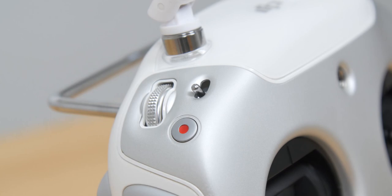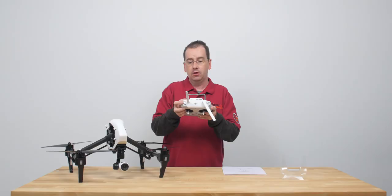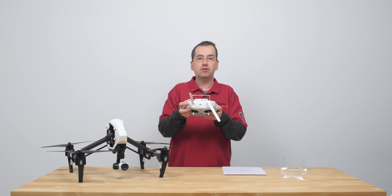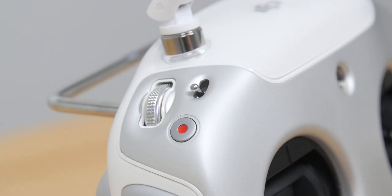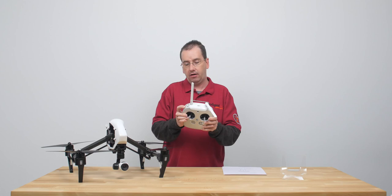We have the gimbal dial. This is going to allow us to tilt the camera forward and backward similar to what you would see on a Phantom or on an H3 3D. Then we have the record button which allows us to record in flight.